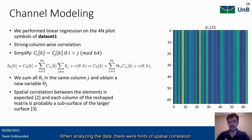When analyzing the data, there were hints of spatial correlation. A linear regression was performed on dataset 1 and showed high correlation between the coefficients, as shown here. We then simplified our model by summing the thetas in the same column of the reshaped configuration matrix and obtained this simplified model. Spatial correlation between the elements is expected and each column of the reshaped matrix is probably a subsurface of the larger surface.